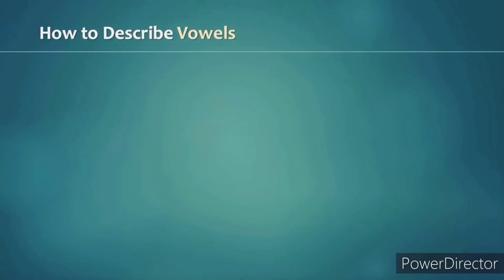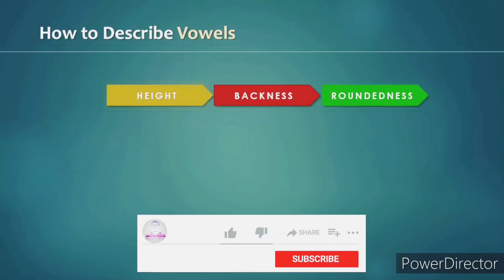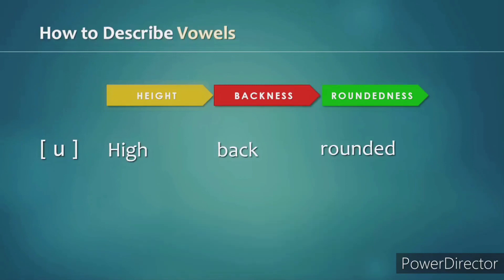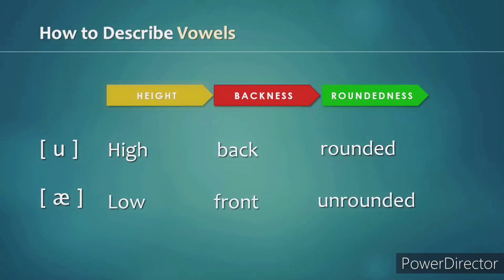Just like with consonants, there is a specific order that linguists use when describing vowel sounds: height, then backness, then roundedness. For example, oo is a high, back, rounded vowel, and ae is a low, front, unrounded vowel. We've only been talking about monophthong vowels so far. If we want to categorize diphthongs using these criteria, we must do so for the starting vowel quality as well as the ending vowel quality, but we won't cover that in this video.